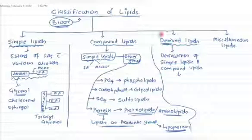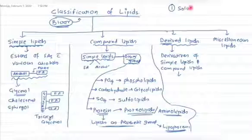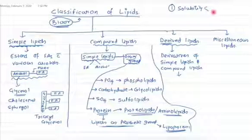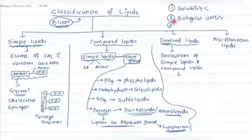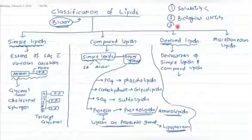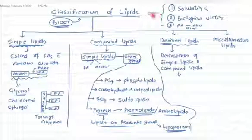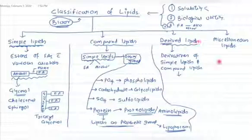The characteristics of lipids from Bloor's definition are: first, solubility — they are soluble in non-polar solvents and not soluble in water; second, biological utility — they must be utilized by the biological system; and third, they must be esters of fatty acids with alcohol. These three characteristics define a lipid, though as we will see, the third rule can sometimes be broken.